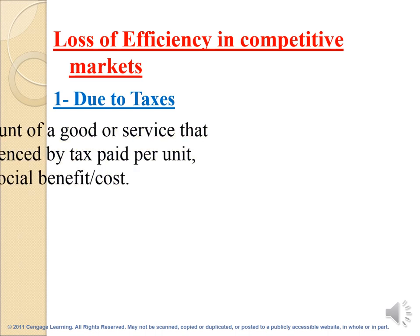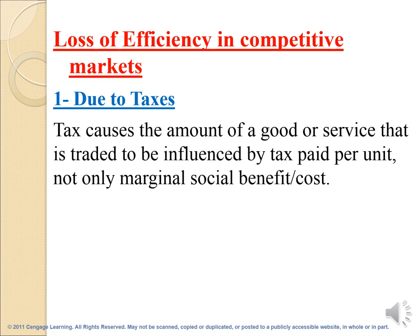A tax causes the amount of goods or services traded to be influenced by the tax paid per unit, not only by the marginal social benefit or the marginal social cost. These taxes will influence quantity — either reducing or increasing it. So the tax distorts the decisions of the market participants.